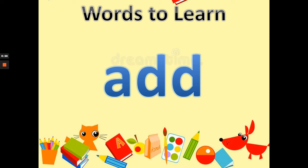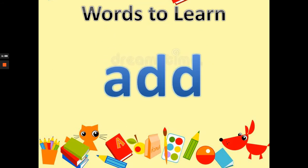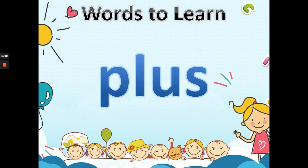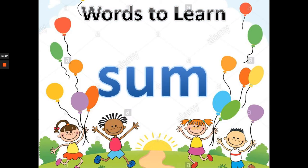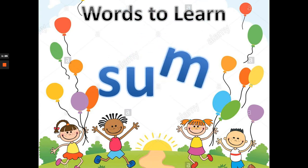Words to learn: first we have 'add.' Let's spell it: A-D-D, add. Next, 'plus.' Let's spell it: P-L-U-S, plus. Next word, 'sum.' Let's spell it: S-U-M, sum.